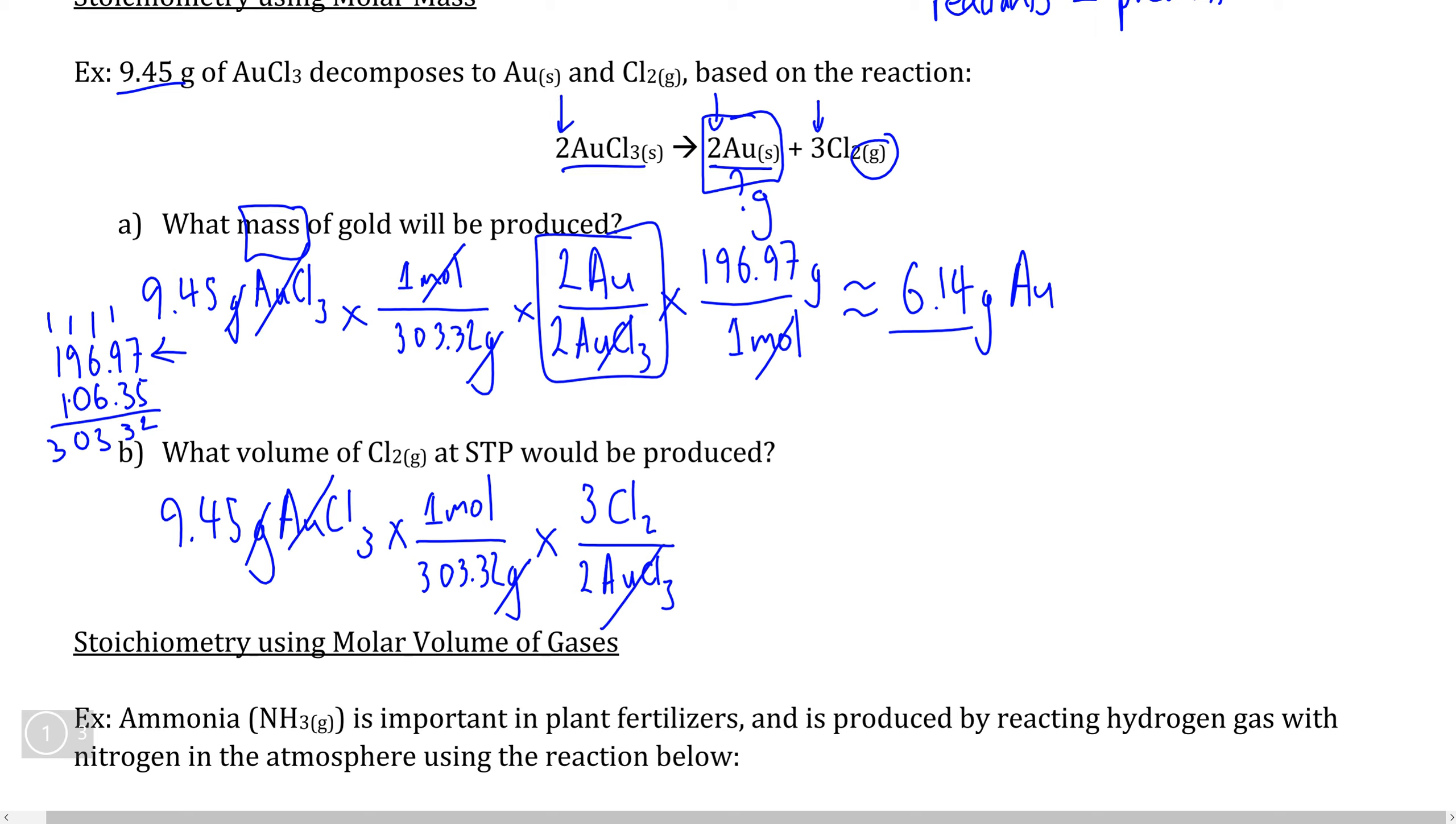So from this conversion factor, we know that we will be looking at moles of Cl2, but remember that the question asked for how many liters of Cl2 we would produce at standard temperature and pressure. And since we know that one mole of any gas at standard temperature and pressure is equal to 22.4 liters, we have just found our final conversion factor. If you put this into your calculator and round to three significant digits, this comes to approximately 1.05 liters of chlorine gas that is produced.